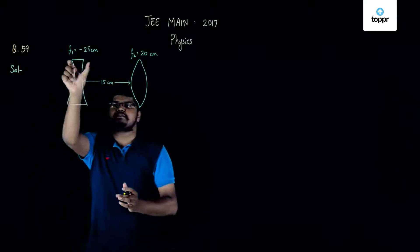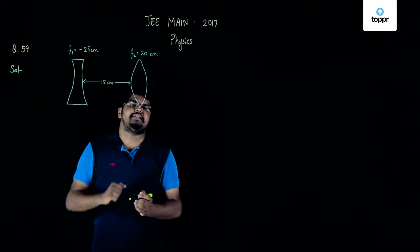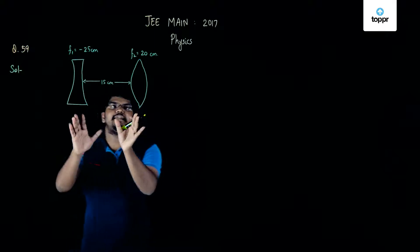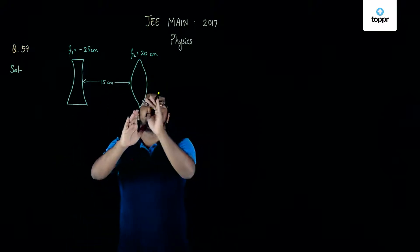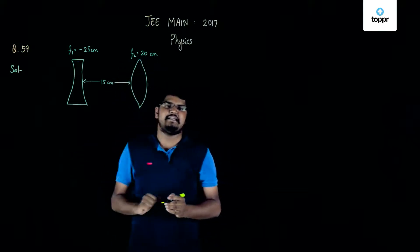Now since this is a diverging lens, we are going to consider its focal length as negative and hence minus 25 centimeter. Now, situated 15 centimeter from it, there is a converging lens of focal length 20 centimeter and based on the sign convention, we are going to take this as plus 20 centimeter.